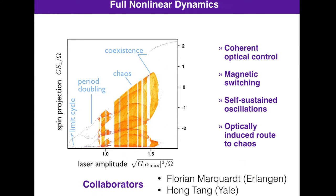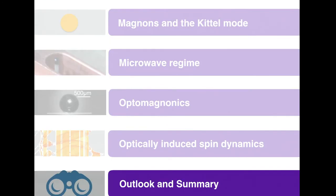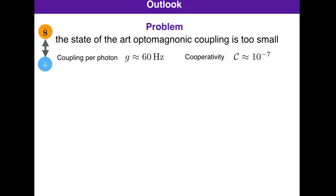This is a collaboration with Florian Marquardt in Erlangen and Hong Tang at Yale. In the last few minutes, let me give an outlook. There is a problem in the current state of the art: the optomagnonic coupling in experiments is too small. The coupling per photon is around 60 Hz, meaning the cooperativity — which should be larger than one for quantum state transfer — is only around 10⁻⁷.